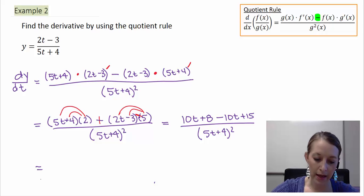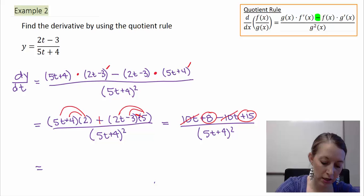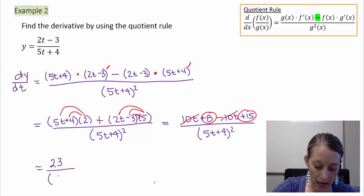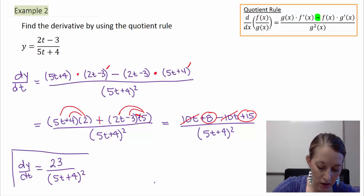Then, combining like terms, my positive 10t and my negative 10t cancel out. And so, all I'm left with is 8 plus 15, which gives me a 23 in my numerator. And that is still all over the denominator squared. 23 over 5t plus 4 quantity squared. And so, here we have the derivative of this guy utilizing our quotient rule.